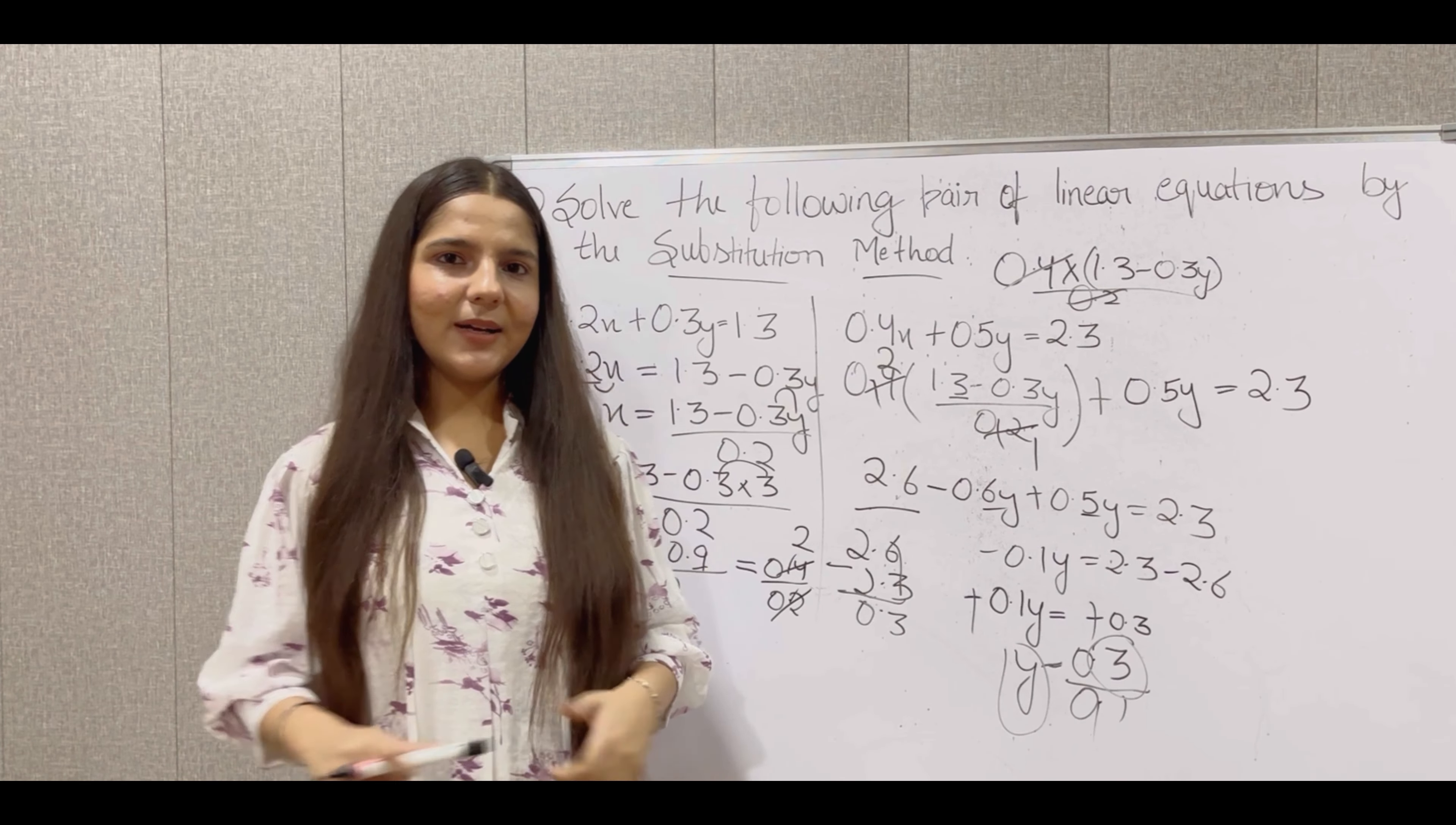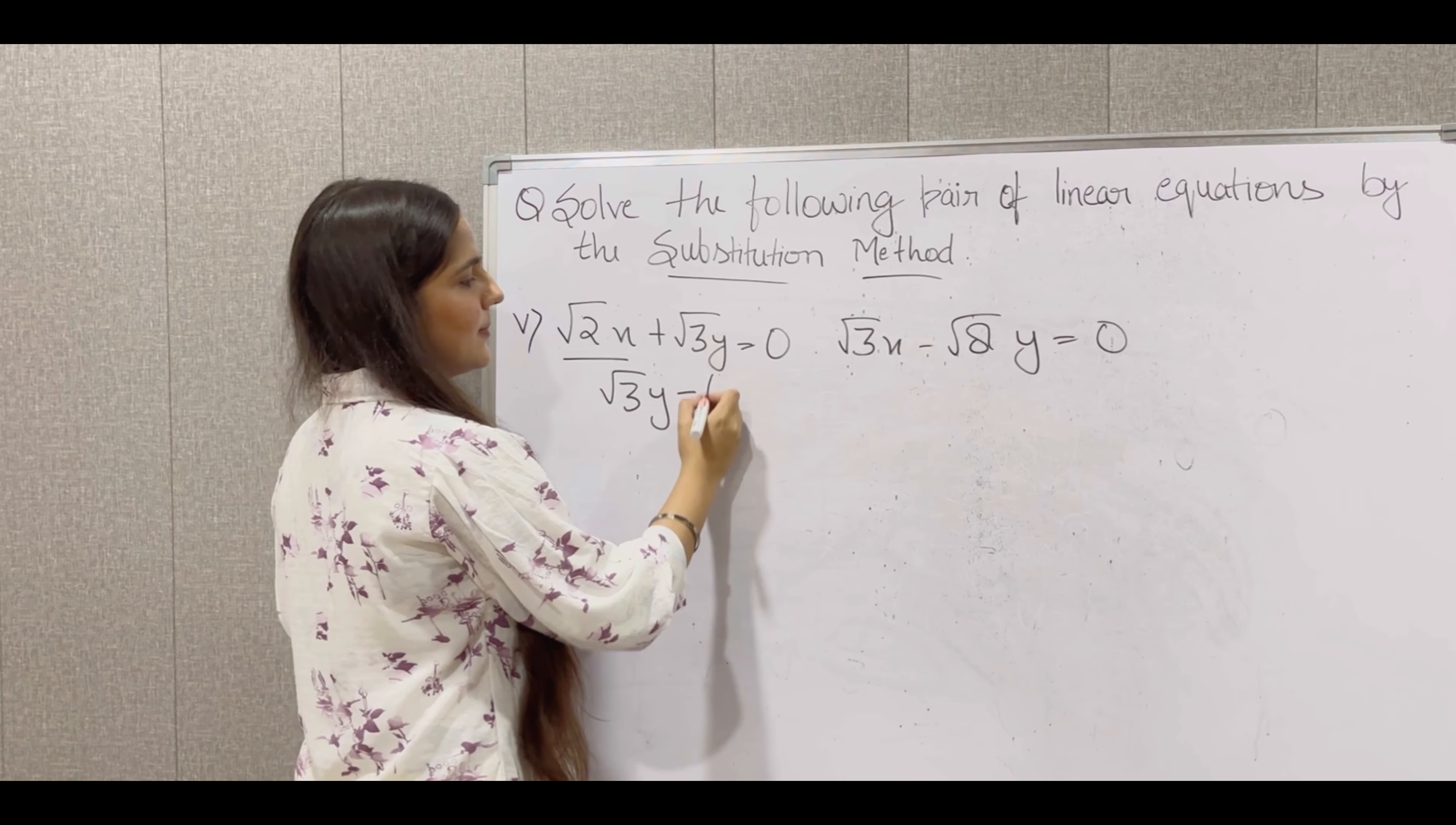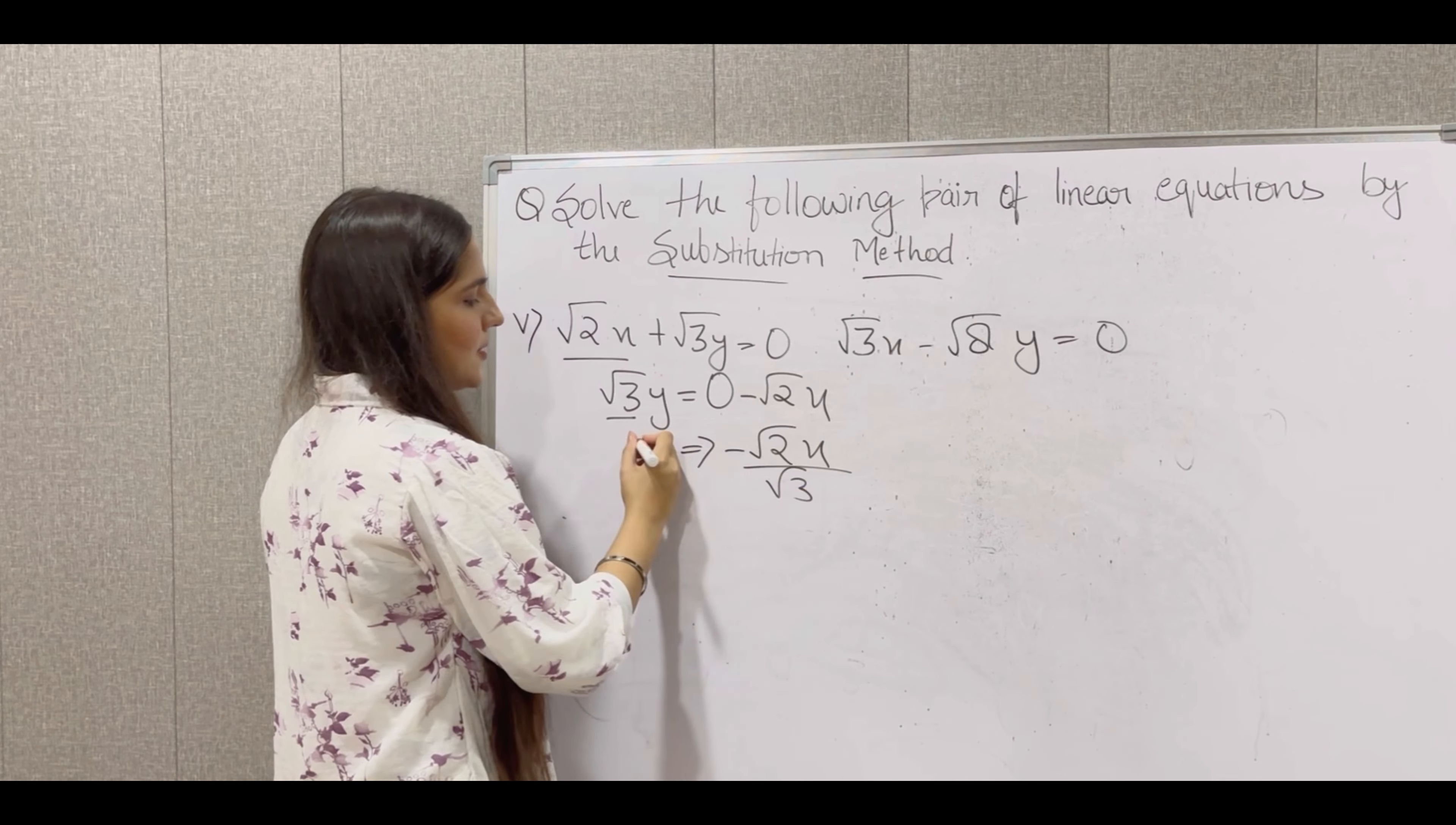Now let's solve its next part. So our next question is root 2x plus root 3y is equal to 0, and root 3x minus root 8y is equal to 0. So here we take y's value. So root 3y is equal to, transfer, plus will become minus, minus root 2x. Now this is multiplication, it will go to division. Minus root 2x upon root 3. So this is the value of y.